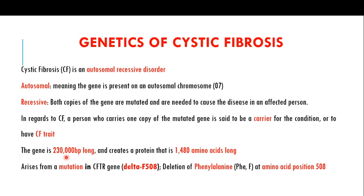The gene responsible for cystic fibrosis is about 230,000 base pairs long and makes a protein that is 1,480 amino acids long. In cystic fibrosis there is a deletion mutation in the CFTR gene — the cystic fibrosis transmembrane conductance regulator, which is an ion channel. Specifically, the phenylalanine normally present at position 508 is deleted, making the protein 1,479 amino acids long.